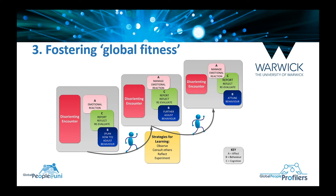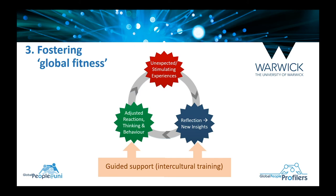This transformational learning process is actually an ongoing one. With these stretch encounters, we may have an emotional reaction — feeling surprised or annoyed, or whatever. We need to reflect on them and then plan and try to adjust our behaviour. We need to observe others, consult with others sometimes, reflect and experiment. As you can see from this diagram, it's an ongoing process. In that ongoing process of learning, guided support from staff or others — intercultural training — is really important. Students, staff, and universities all need to work together, complementing each other in helping to foster global fitness.